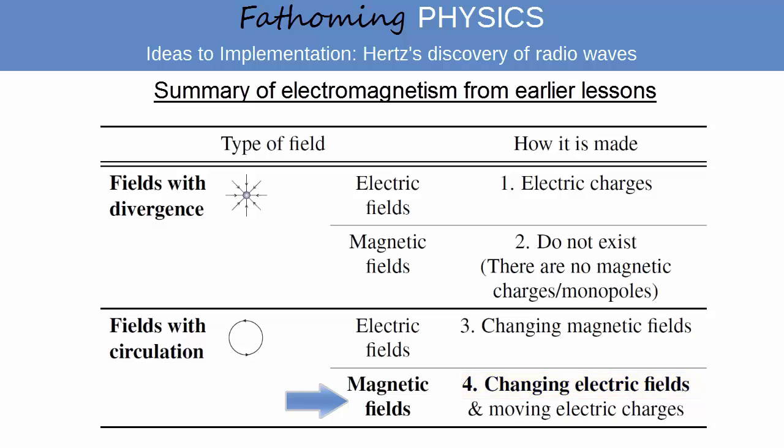A magnetic field with curl can also be made by a changing electric field. In this way, there is a symmetry between how a changing magnetic field creates an electric field, and a changing electric field creates a magnetic field.